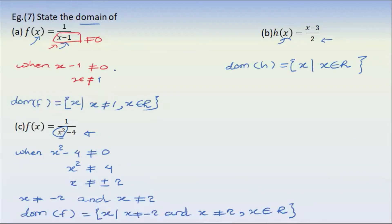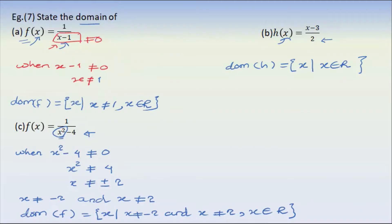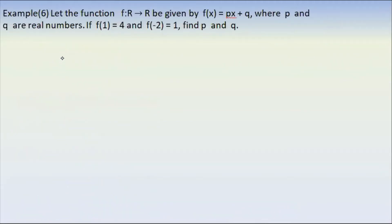So plus 4 minus 4 equals zero. The domain of f is equal to the set of x such that x is not equal to minus 2 and x is not equal to 2, where x belongs to ℝ. The domain of f is therefore all real numbers except x = ±2.